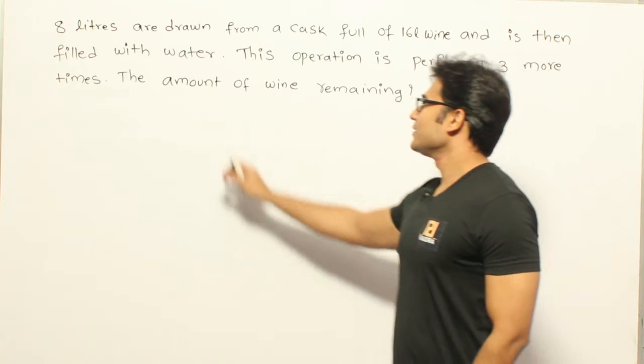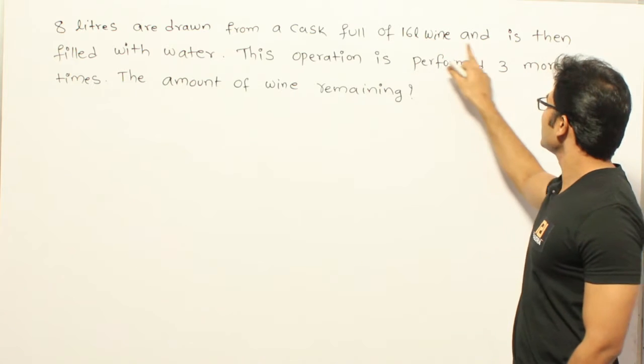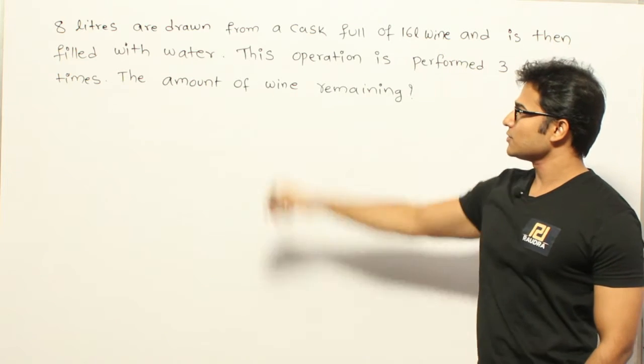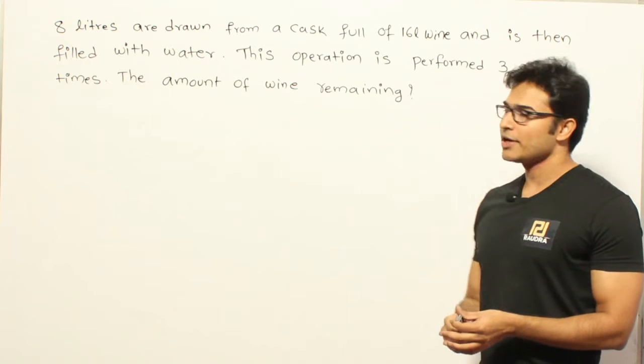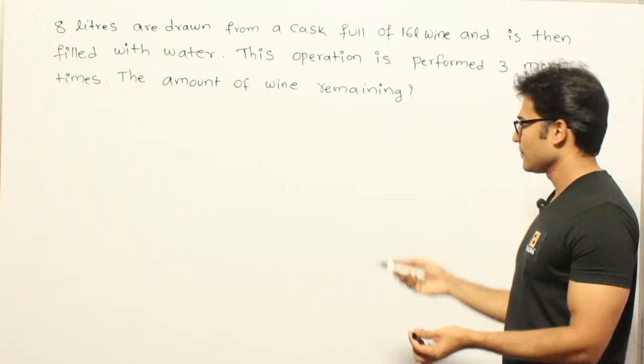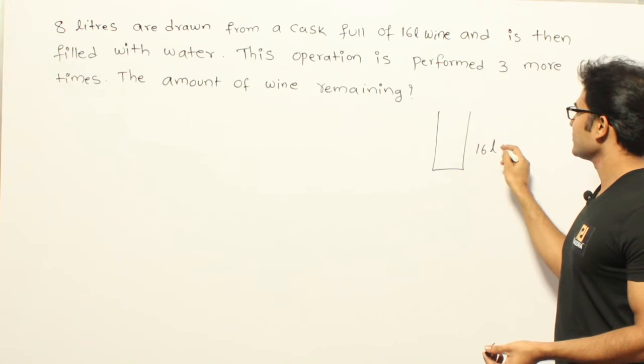Alright, series. 8 liters are drawn from a cask full of 16 liters wine and is then replaced with water. This operation is performed 3 more times. The amount of wine remaining is... So they are saying that there is a cask which is having 16 liters of wine.